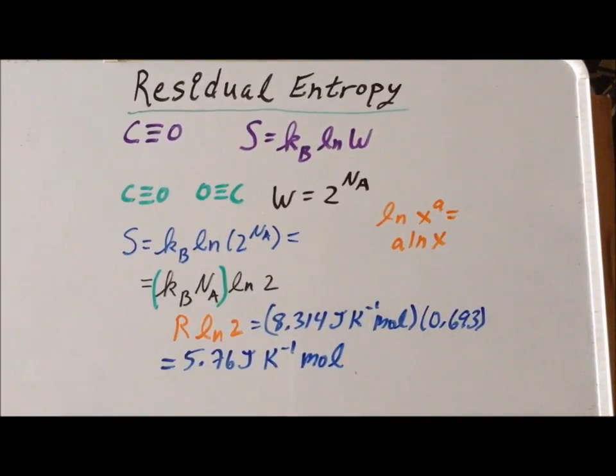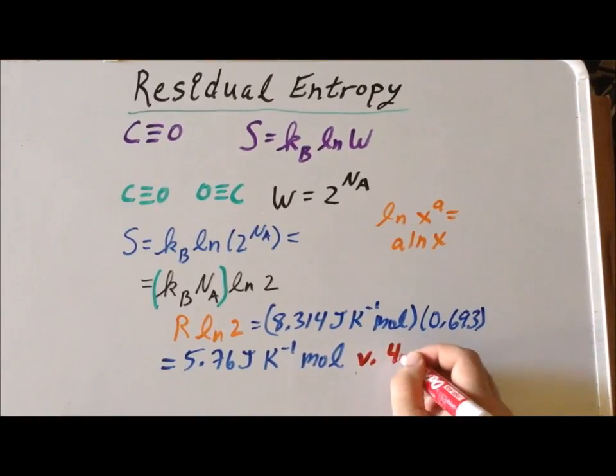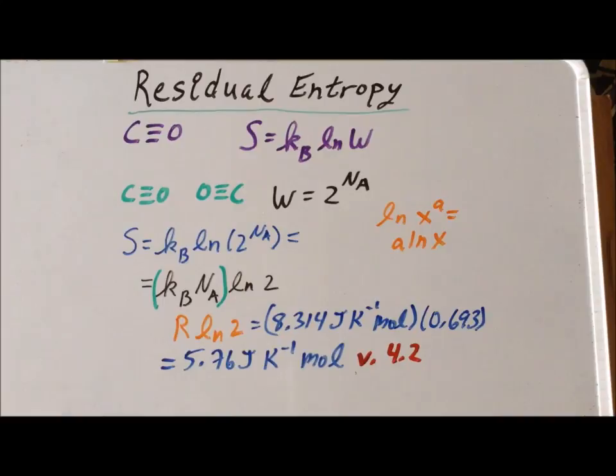Now, it turns out that the experimental value is known, and we can compare that, is actually 4.2 joules per Kelvin mole. So the question arises, though we're very close in our calculation, why were we not able to calculate the exact value?